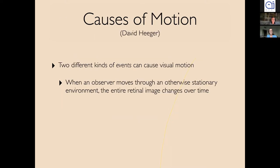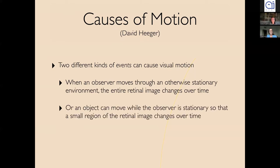There are two different kinds of events causing visual motion: one is when an observer moves through an otherwise stationary environment — the entire retinal image changes over time. The other is when the object moves in the scene and the observer is stationary, so only small regions of the retinal image change. Of course there is a third case where both happen simultaneously, which is the normal case for humans and a tricky challenge for computer vision.